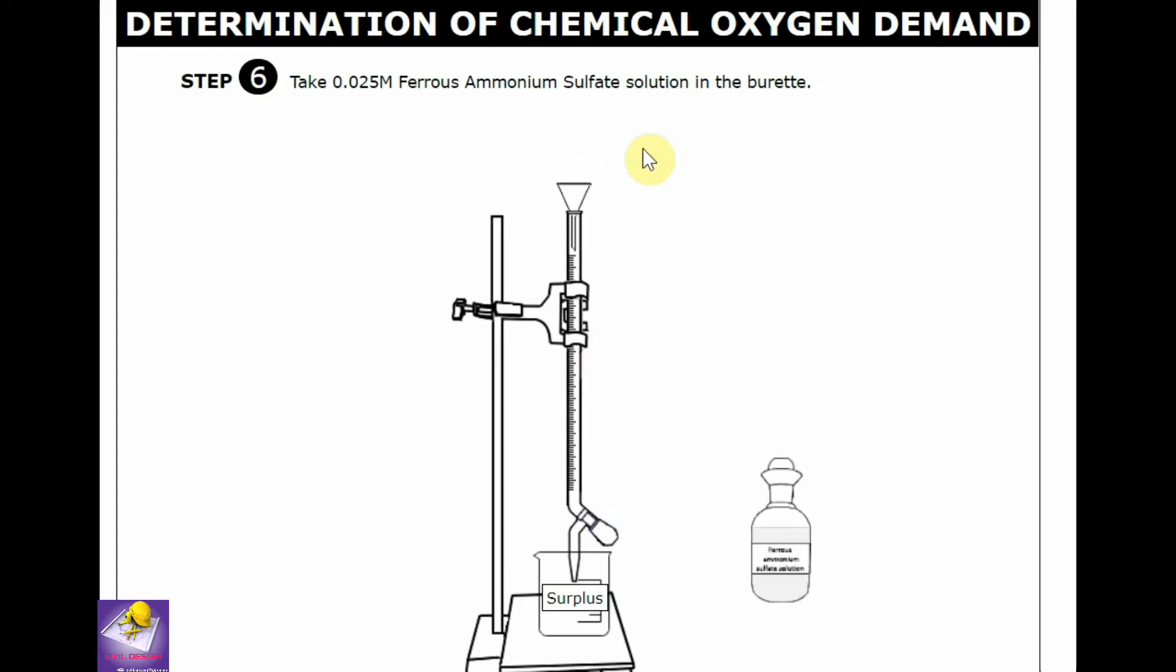And now add 0.025 M ferrous ammonium sulfate to the burette. Set the reading to 0 on the burette.